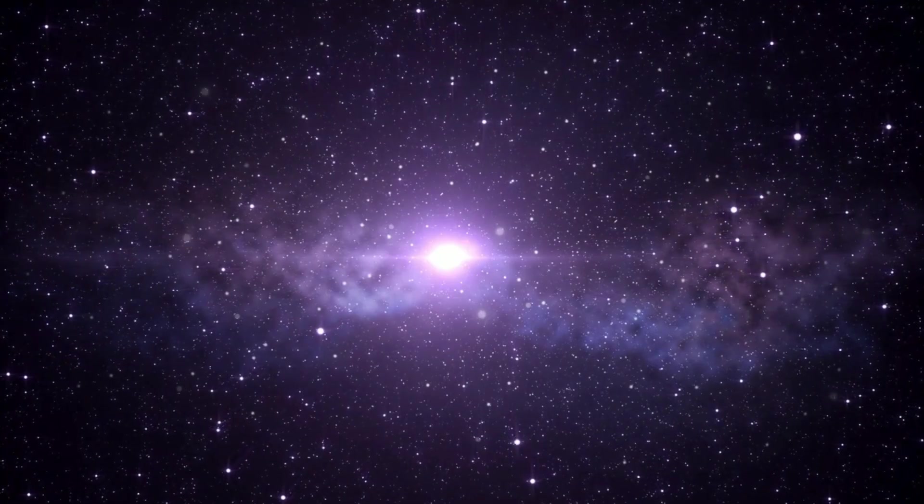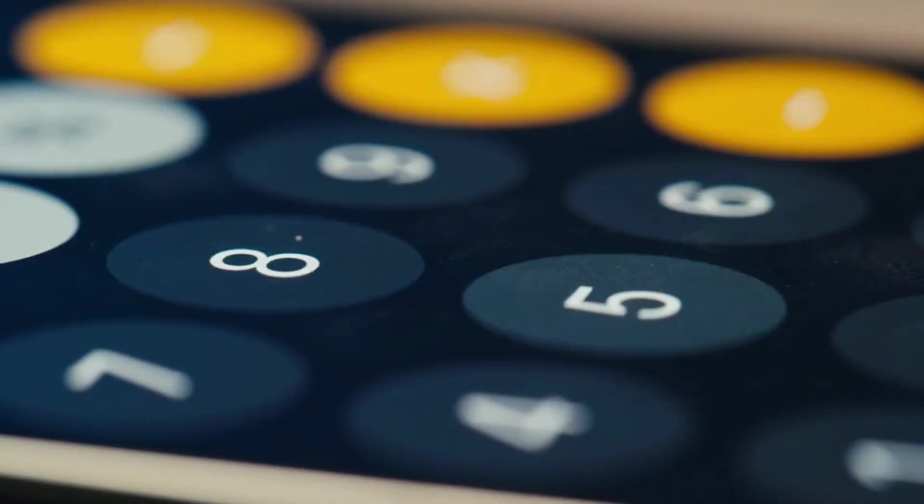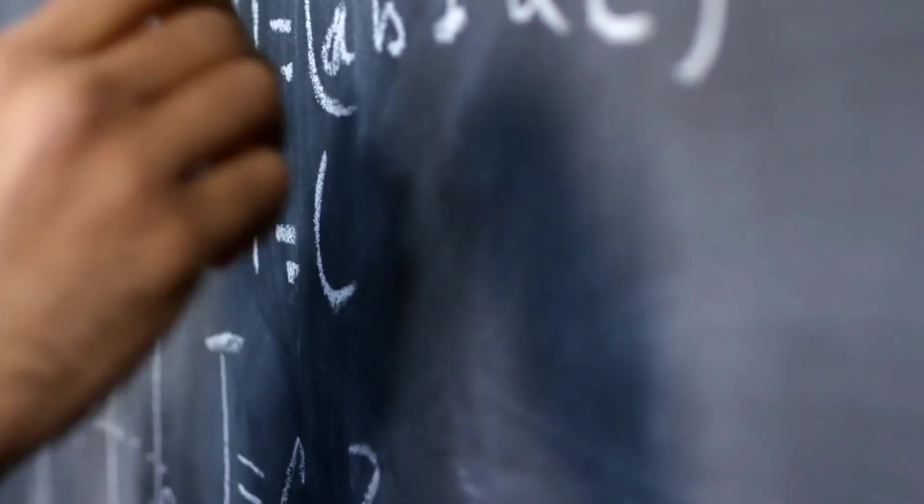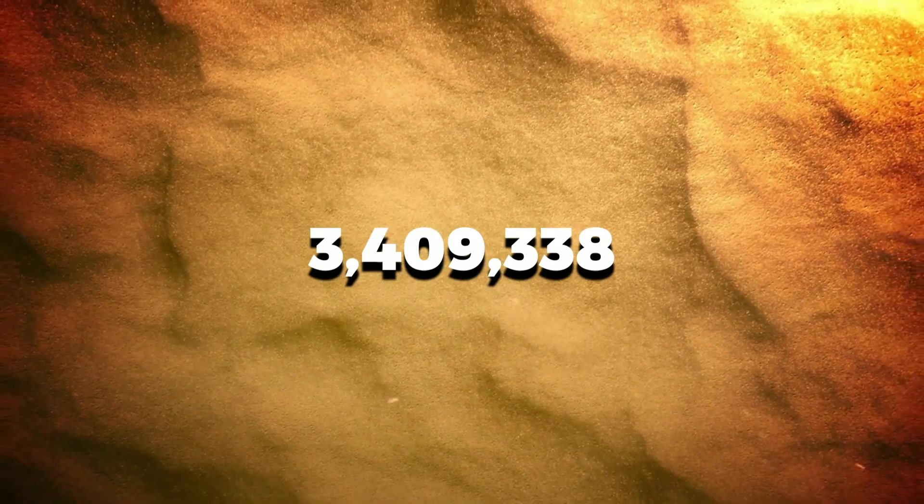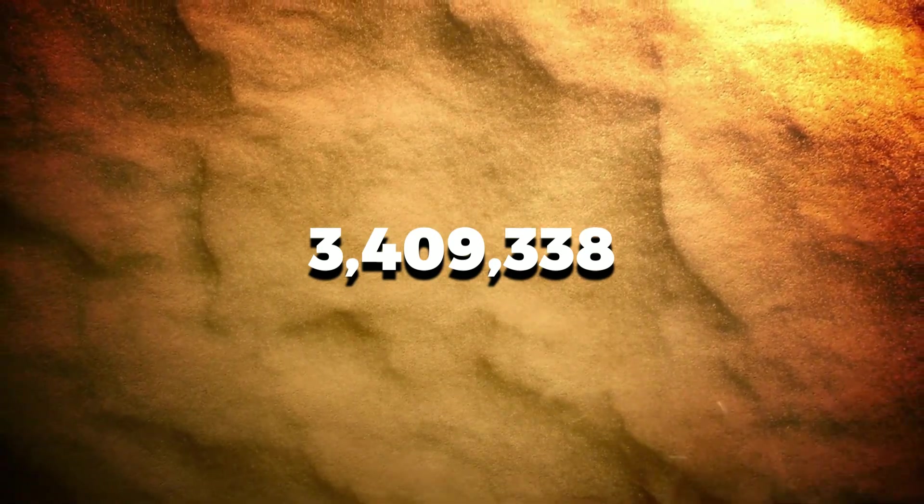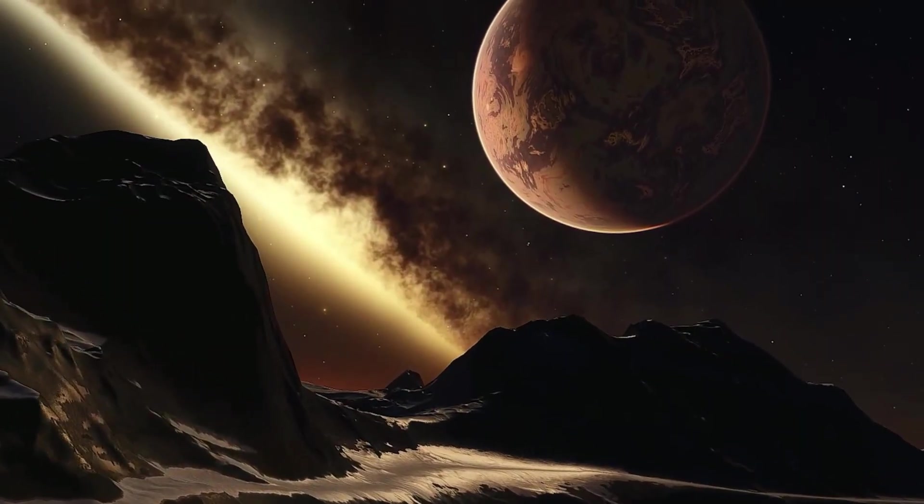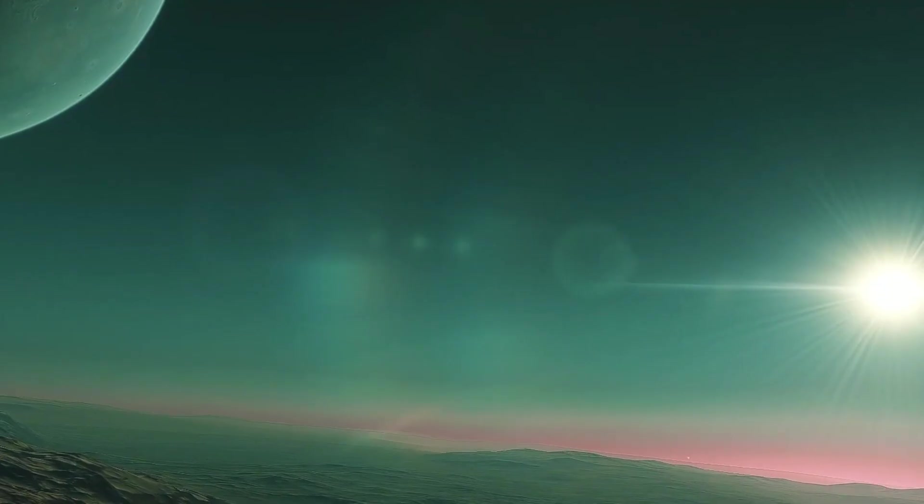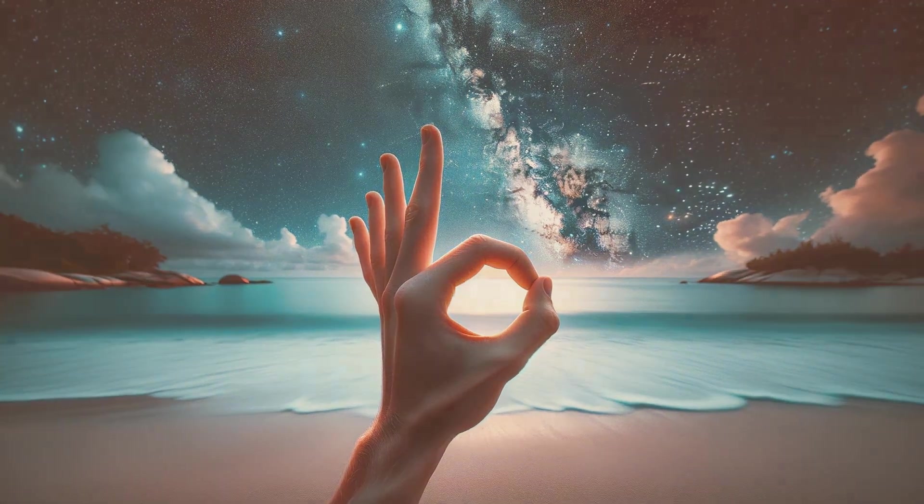This is the entire celestial sphere, so we can divide this number by the area of a grain of sand held at arm's length, and we get 3,409,338 grains of sand that would cover the entire sky if they were arranged spherically side by side within an arm's radius of the eye.